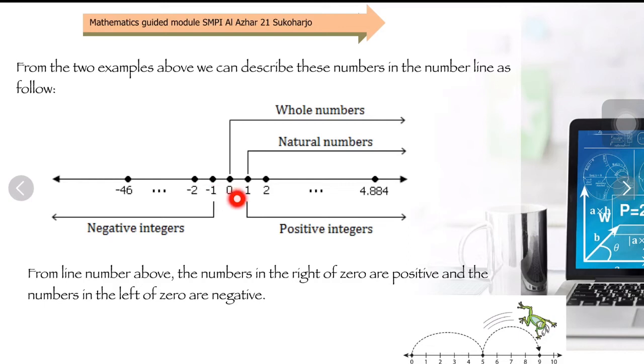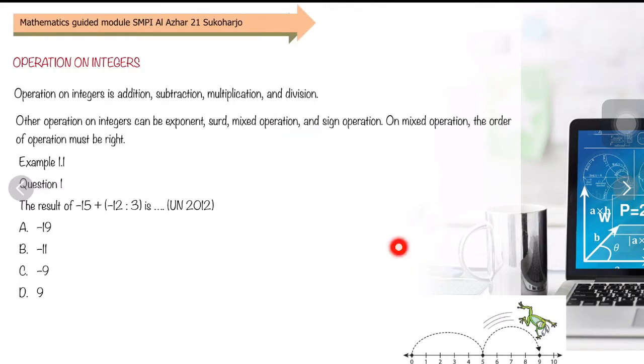Integers themselves have three parts: negative integers, zero, and positive integers. Positive integers, which are 1, 2, 3 and so on, can also be called natural numbers. Natural numbers plus zero are called whole numbers.